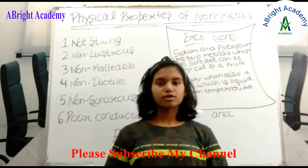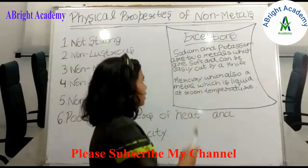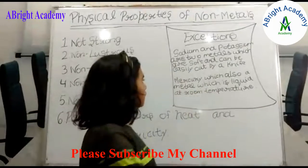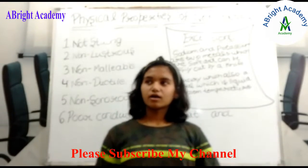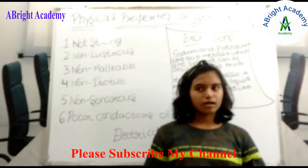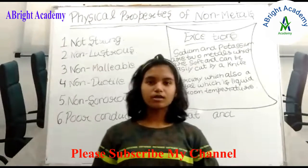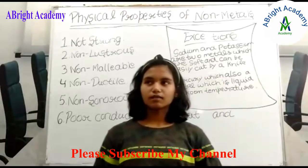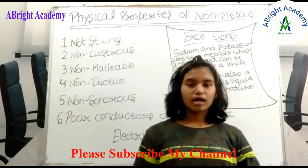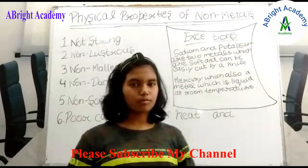There are also some exceptions of metals. There are two exceptions. Sodium and potassium are also metals. I said that metals are strong, but these two metals are soft and they can be easily cut with a knife. Also, you know that most metals are in solid form, like aluminum, iron, etc. However, mercury is also a metal which is in liquid state at room temperature. The exact temperature at which mercury becomes a solid is minus 38.83 degrees Celsius. So these are some exceptions of metals.